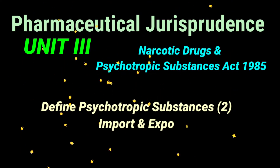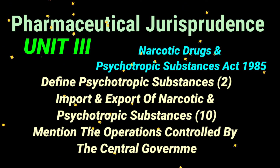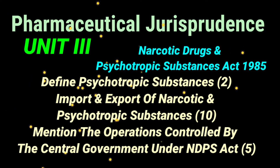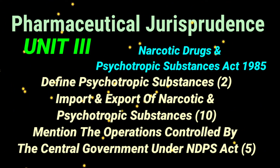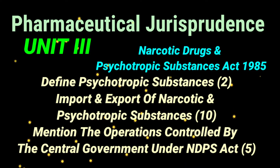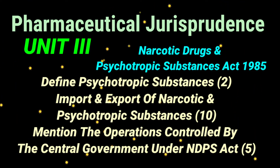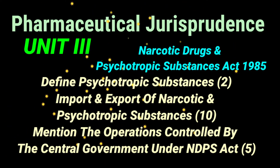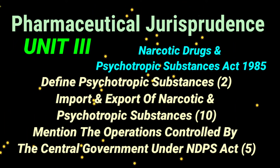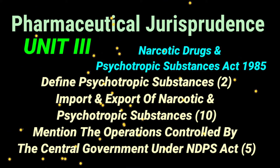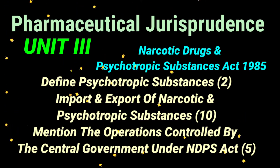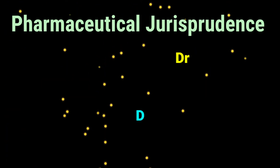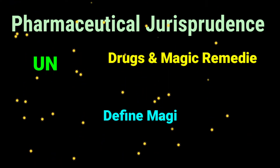The next act in Unit 3 is the Narcotic Drugs and Psychotropic Substances Act 1985 and Rules, shortly known as the NDPS Act 1985. Important questions include: definition of the term 'psychotropic substances,' import and export of narcotic and psychotropic substances, and mention of operations controlled by the Central Government under the NDPS Act 1985.